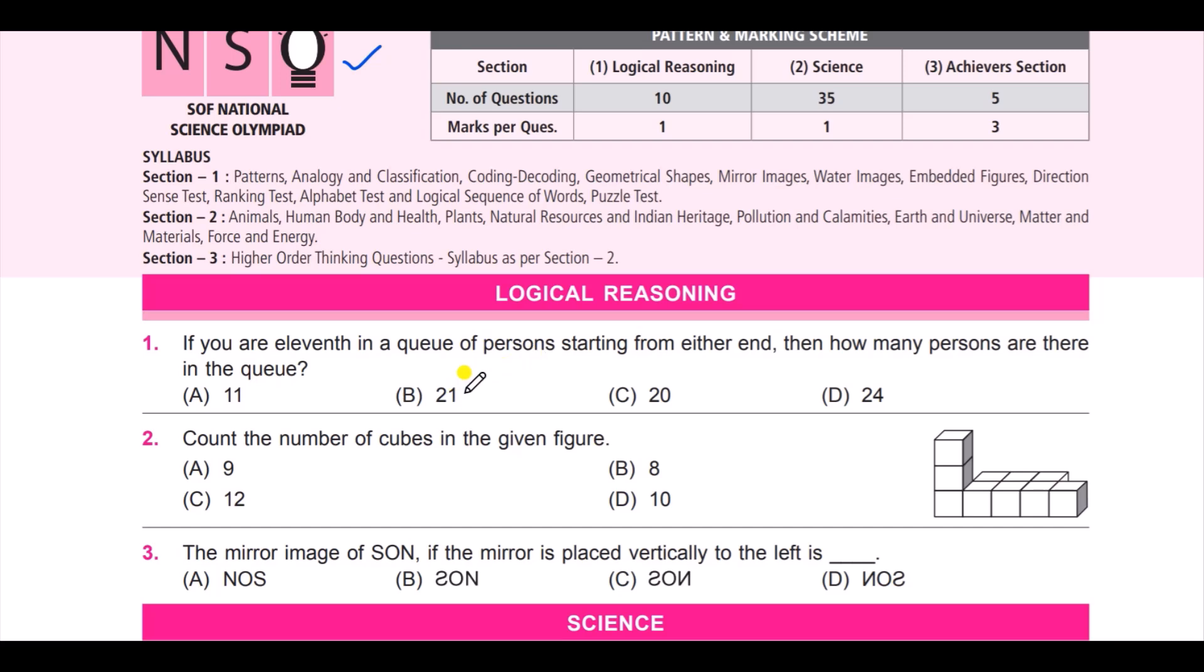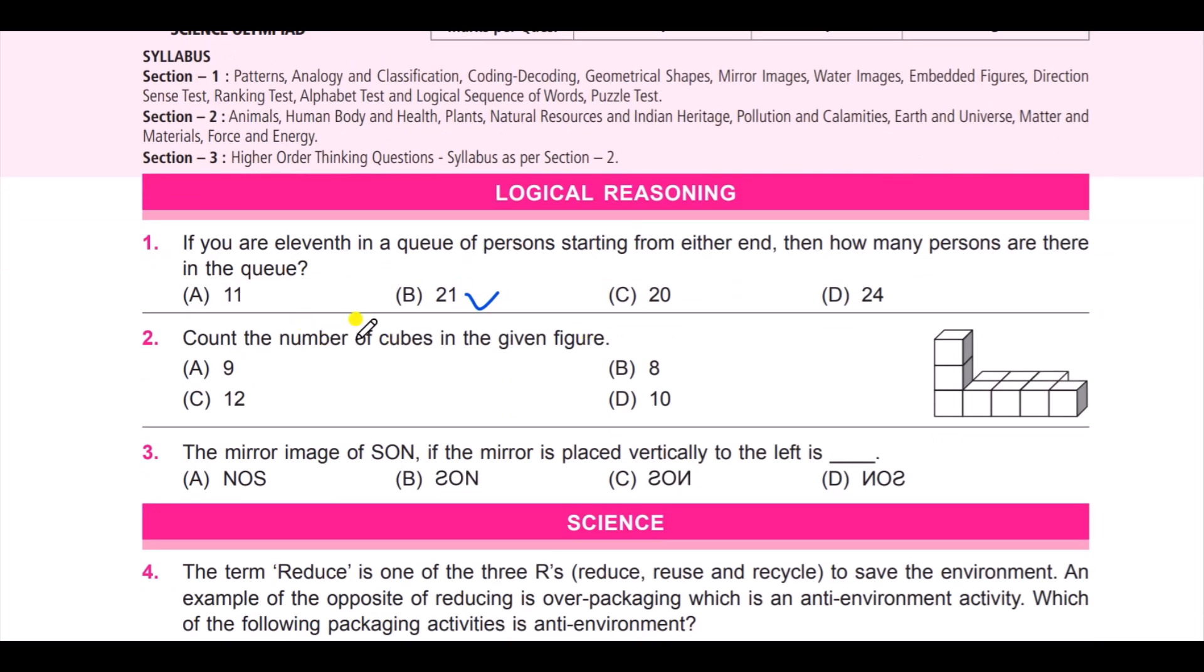Next question: count the number of cubes in the given figure. Look at the options here: option A is 9, B is 8, C is 12, and D is 10. So let's count the cubes: one, two, three, four, five, six, seven, eight, nine, ten. These three are behind, so total are 10.